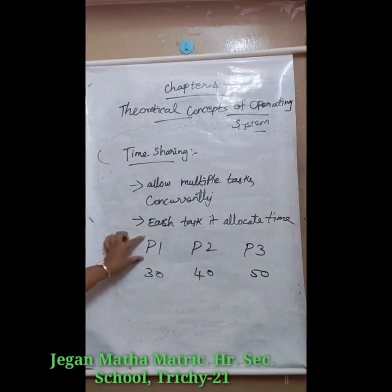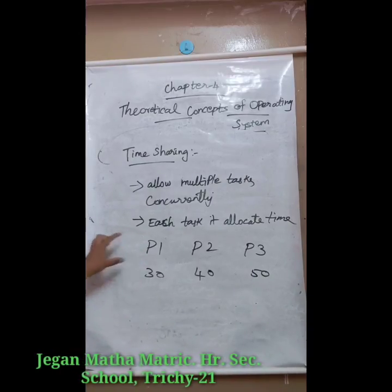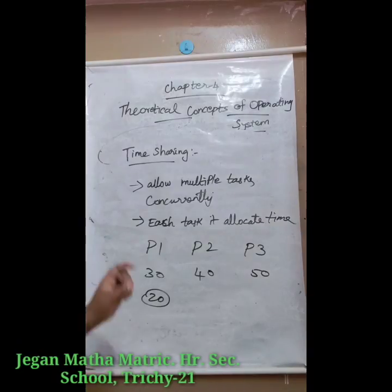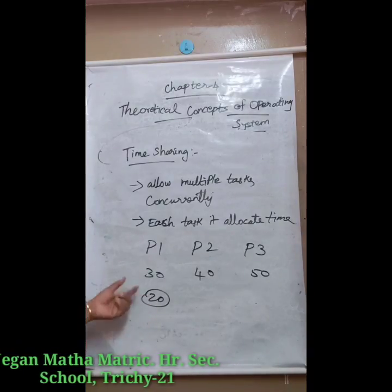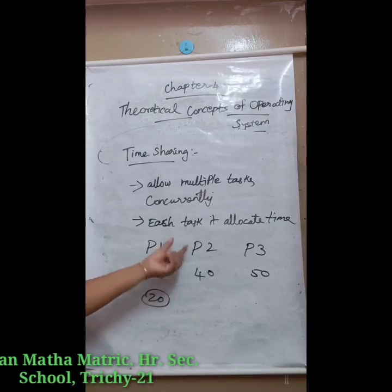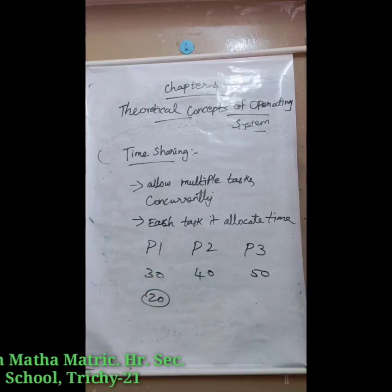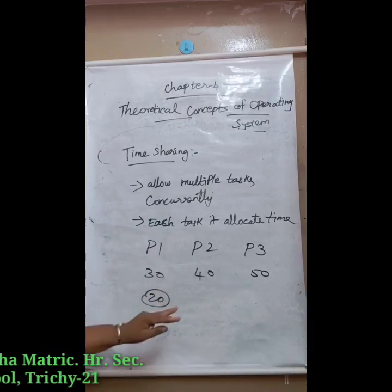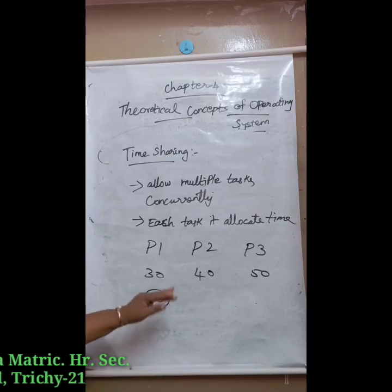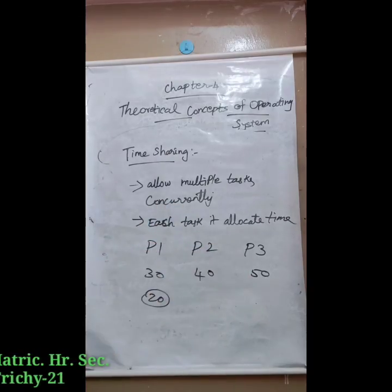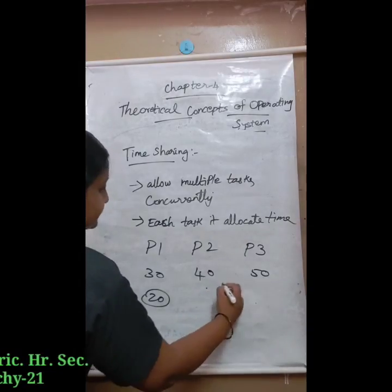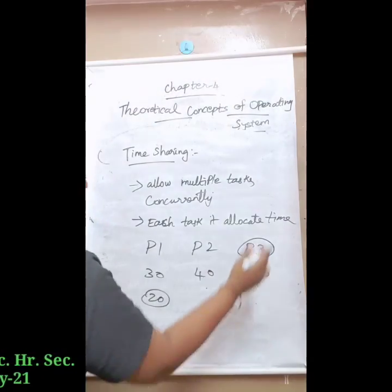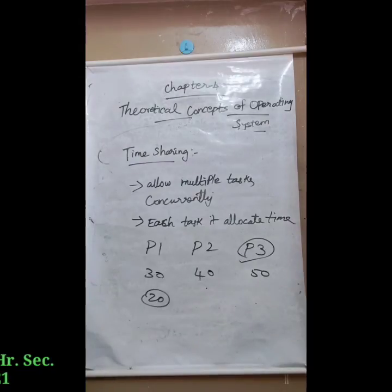If process P1 completes within 20 minutes, then the processor moves to the next process P2 for execution. If process P2 cannot complete within 40 minutes, it passes the current work and switches over to process P3. After completing P3, it continues again with process P2. This is the method of time sharing — you divide the time and you can work with it.